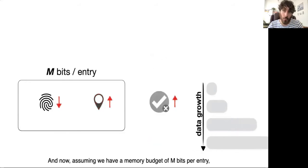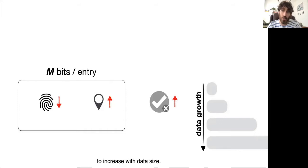Assuming we have a memory budget of m bits per entry, the fact the level IDs must grow means they must steal bits away from the fingerprints, which can cause false positive rate to increase with data size.